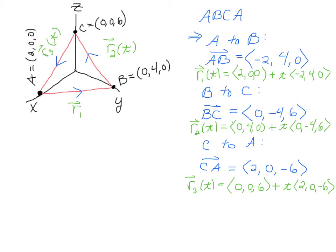And then BC, the vector BC, will be similarly constructed, and we'll start at ⟨0, 4, 0⟩, and then plus t, and then this direction vector, 0, 4, sorry, ⟨0, -4, 6⟩.